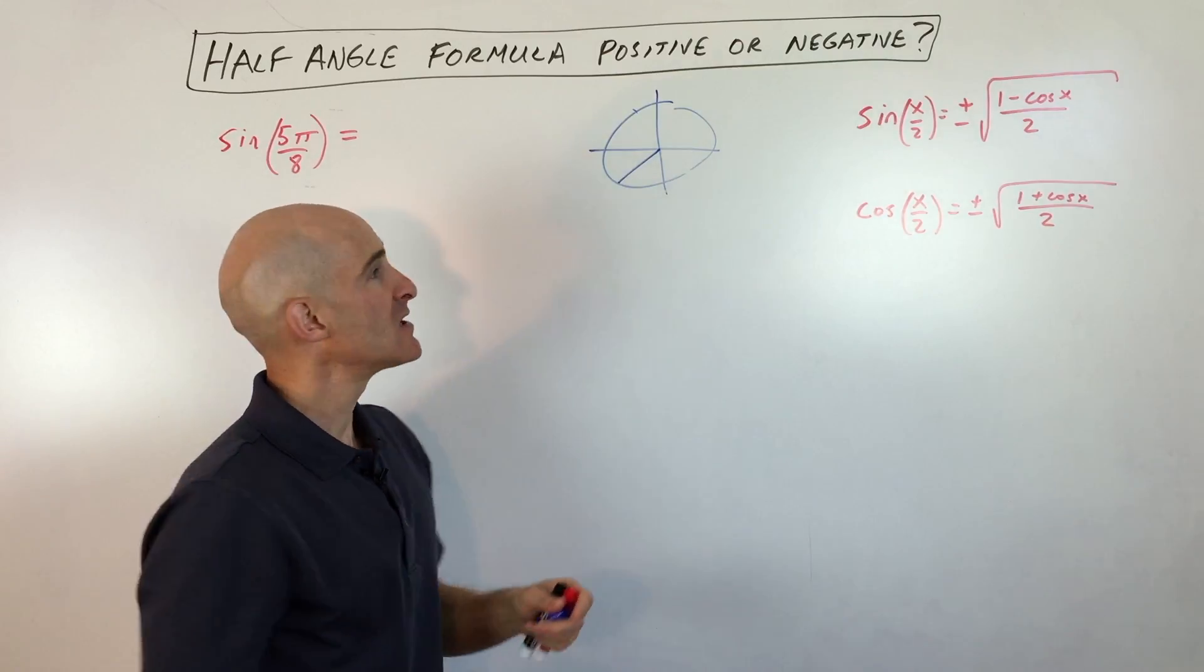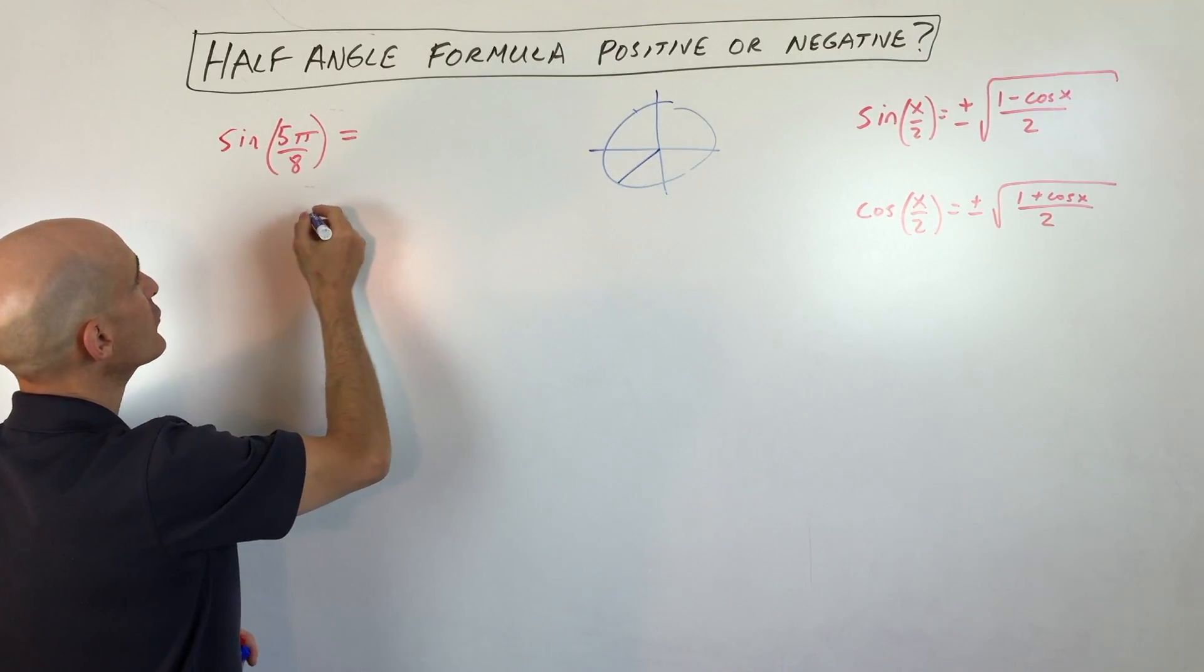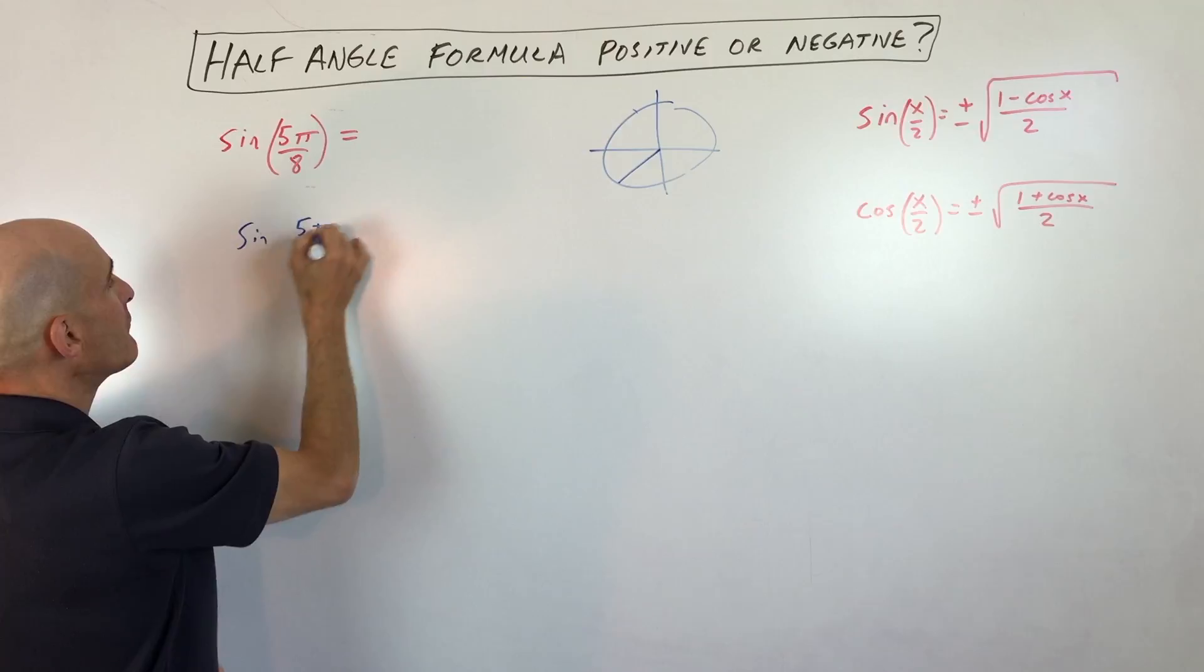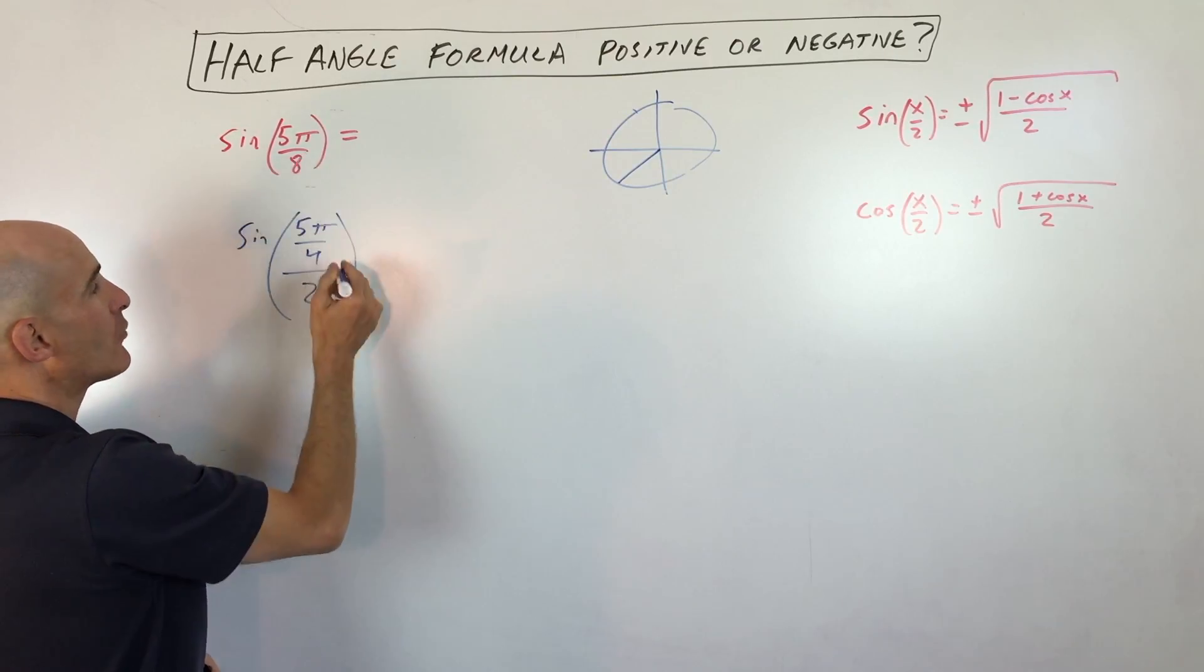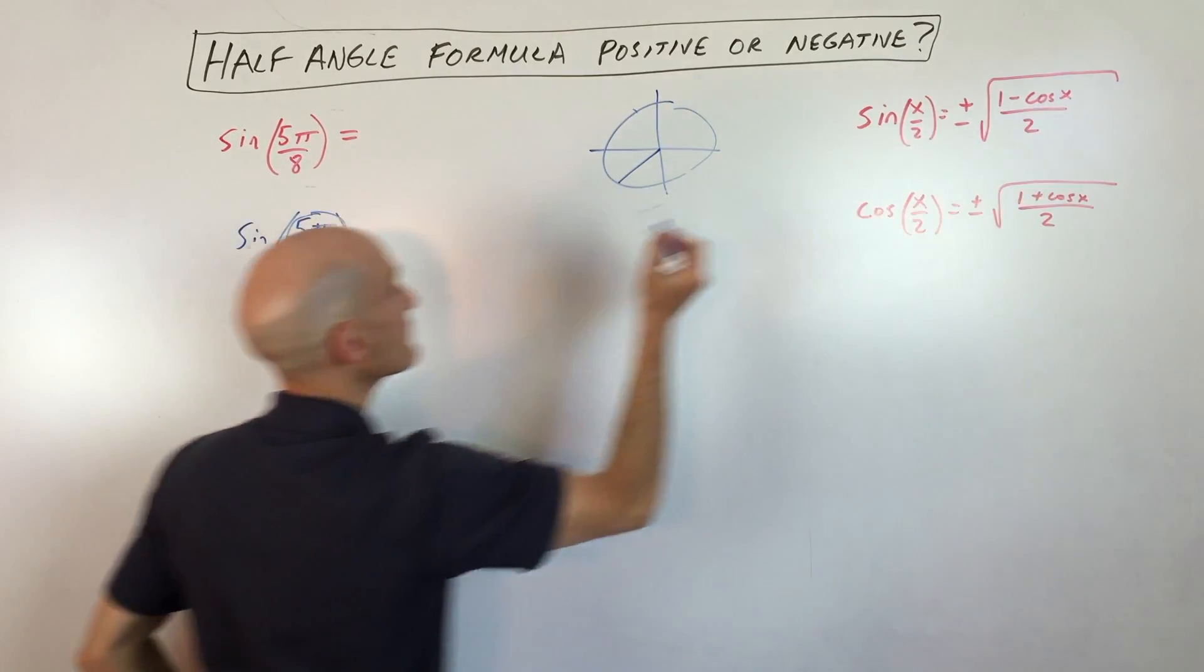So does that clear it up? It's not the angle that you're going to be using, 5π/4. Let's see if we can simplify this a little bit further. This basically comes out to sine of 5π/4 divided by 2, which is 5π/8. So this is our x, this is what's going to be going into our formula here in place of x.